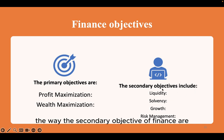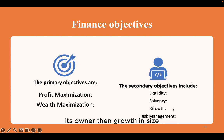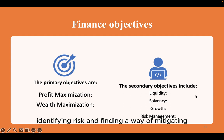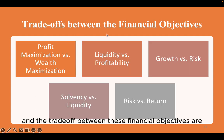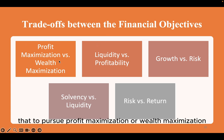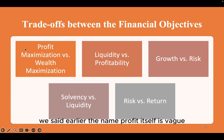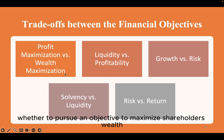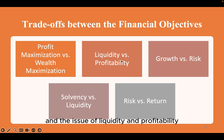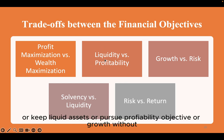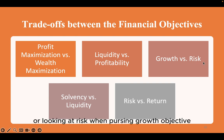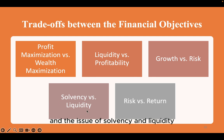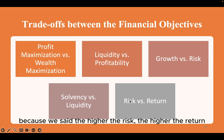The secondary objectives of finance include liquidity — providing liquidity for the operation of the firm; solvency — ensuring that the firm outlives its owners; growth in size; and risk management — identifying risks and finding ways of mitigating or reducing them. There are trade-offs between these financial objectives: between profit maximization and wealth maximization, between liquidity and profitability, between pursuing growth and managing risk, between solvency and liquidity, and in the trade-off between risk and return — the higher the risk, the higher the return.